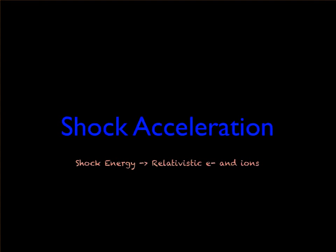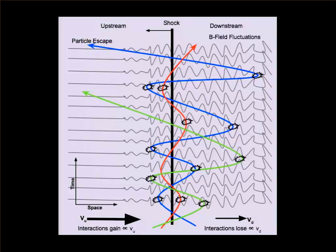The next process is shock acceleration — turning shock kinetic energy into particle energy in relativistic electrons and ions. This basic process involves particles reflecting off magnetic field inhomogeneities in the region around a shock, where there is higher velocity on one side and lower velocity on the other. On average, as these particles cross back and forth across the plane of the shock, they gain energy until they are relativistic enough to escape the shock and radiate away their energy somewhere else.